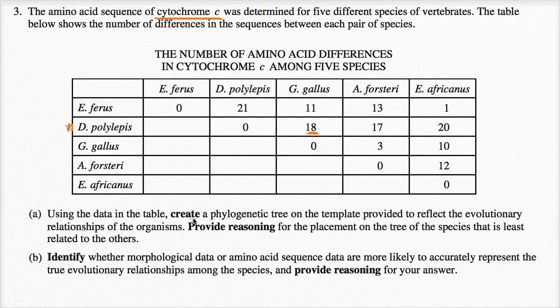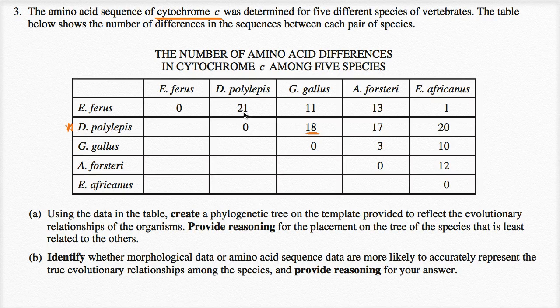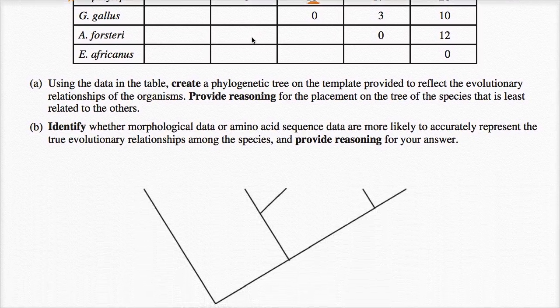Using the data in the table, create a phylogenetic tree on the template provided to reflect the evolutionary relationships of the organisms. Provide reasoning for the placement on the tree of the species that is least related to the others. So, looking at these differences, it's reasonable to say the things that have the fewest differences in the sequence of cytochrome C are probably most closely related. And they already gave us a tree here.